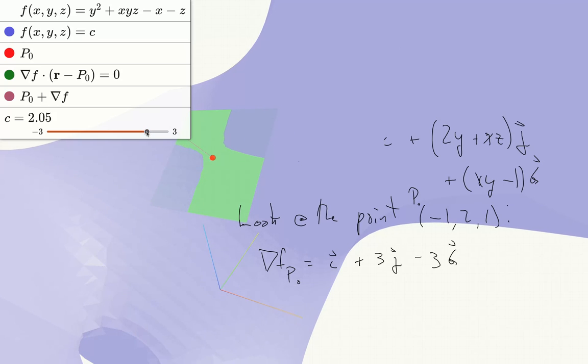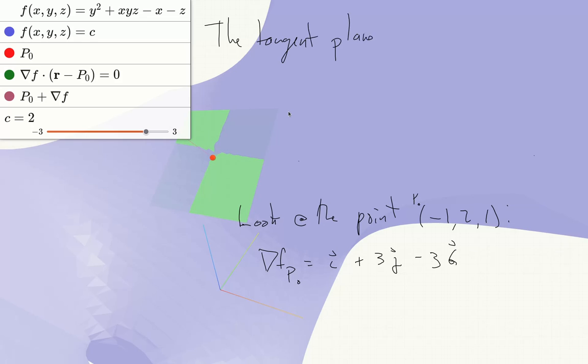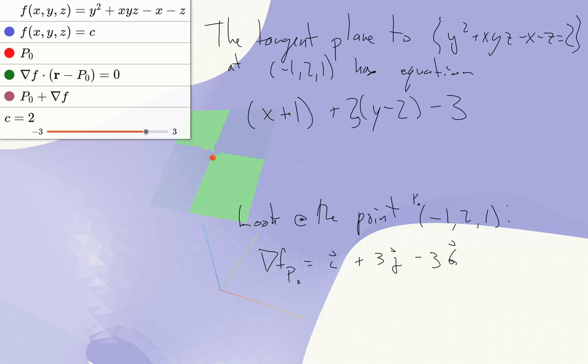So we get that the tangent plane to this surface y squared plus xyz minus x minus z equals 2 at (-1, 2, 1) has the equation (x plus 1) plus 3(y minus 2) minus 3(z minus 1) equals 0.